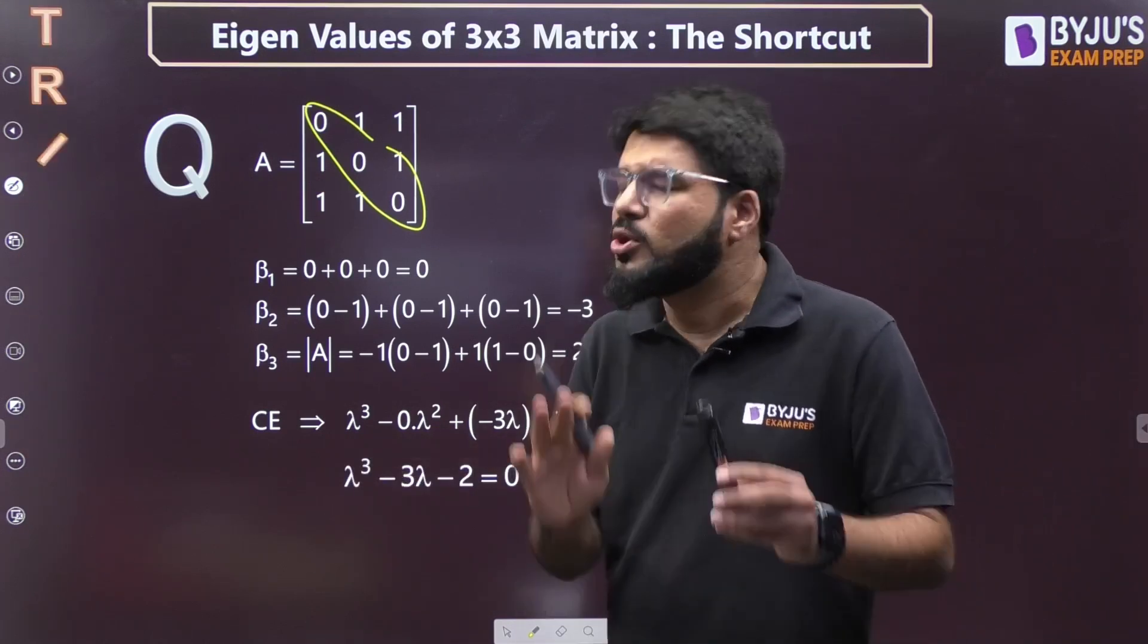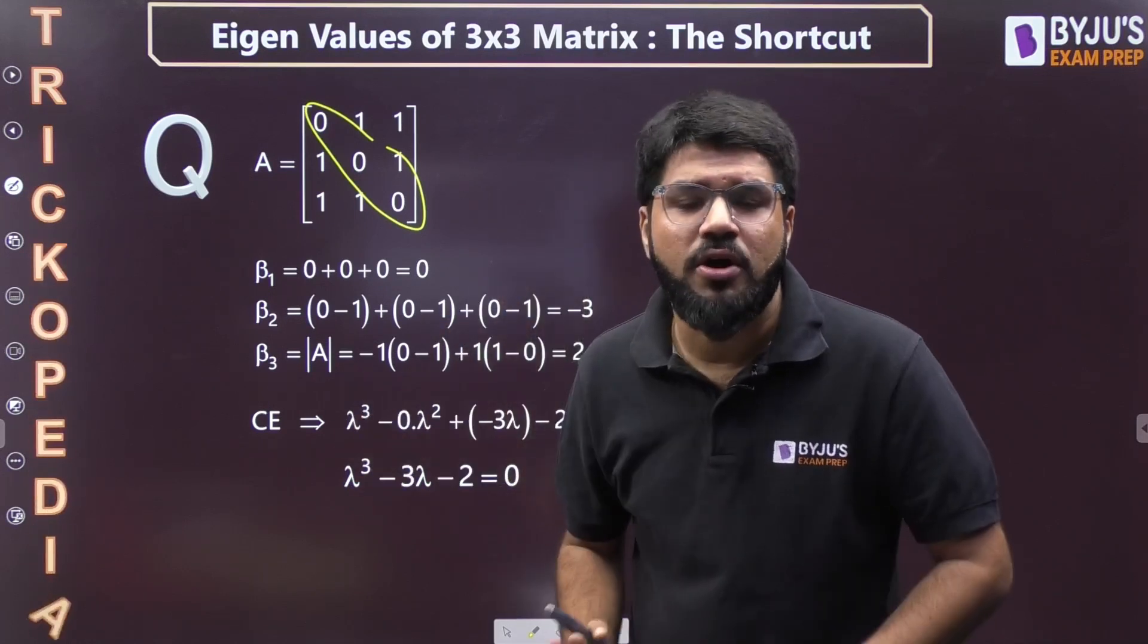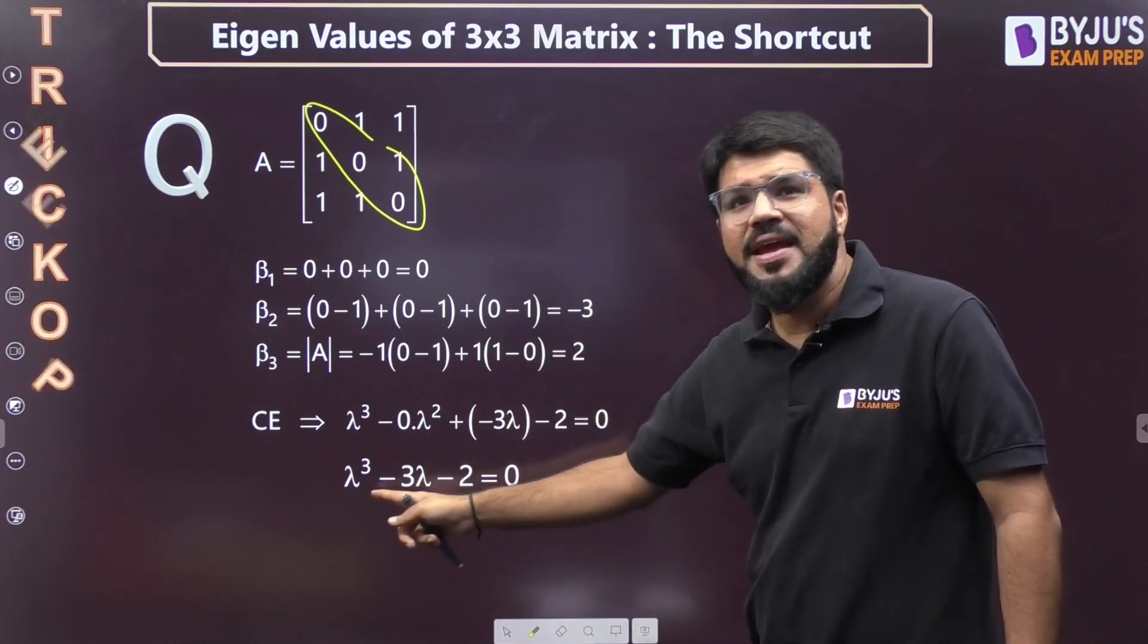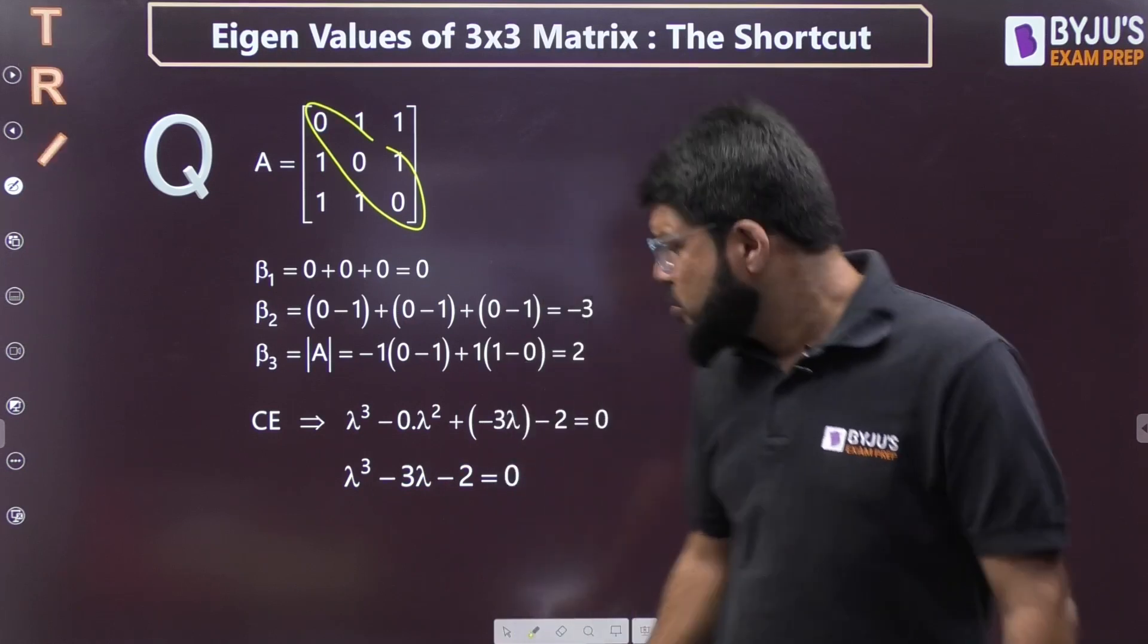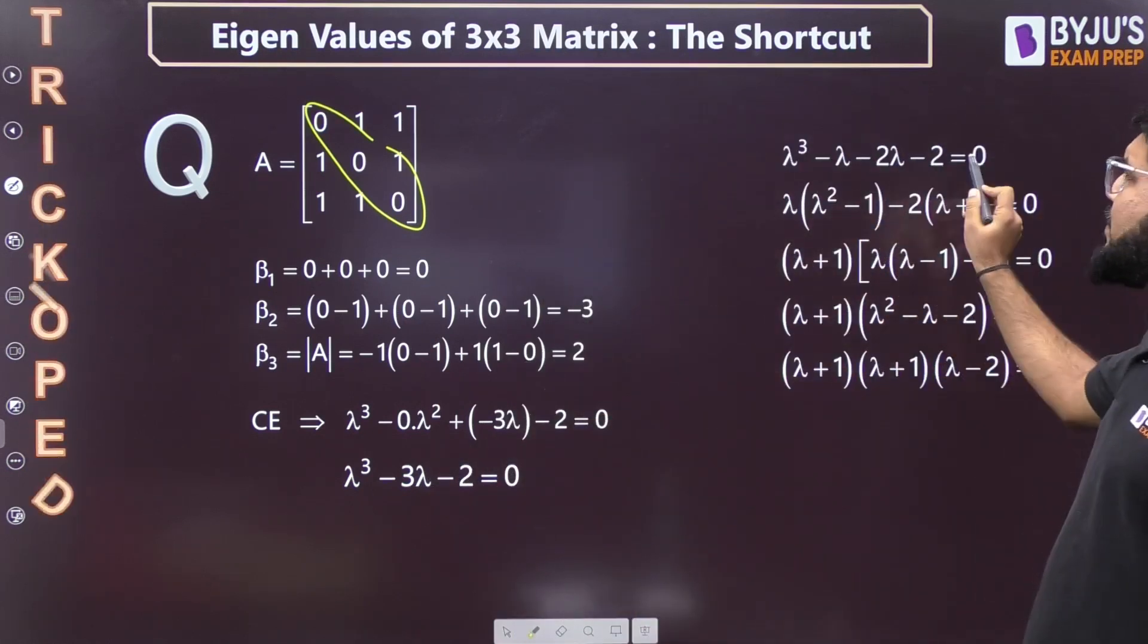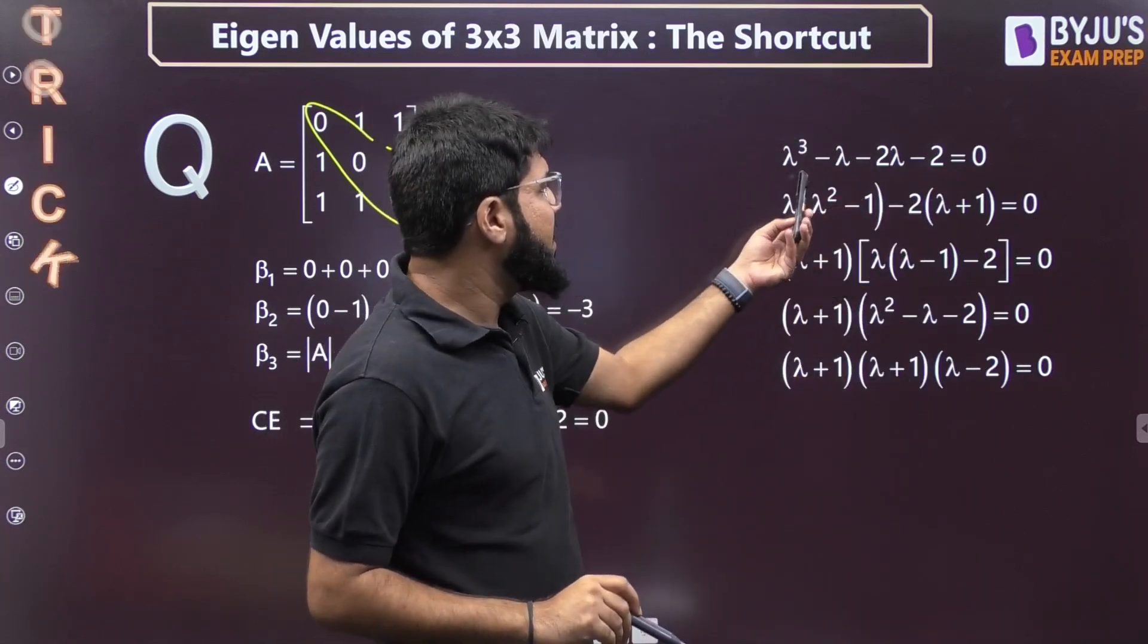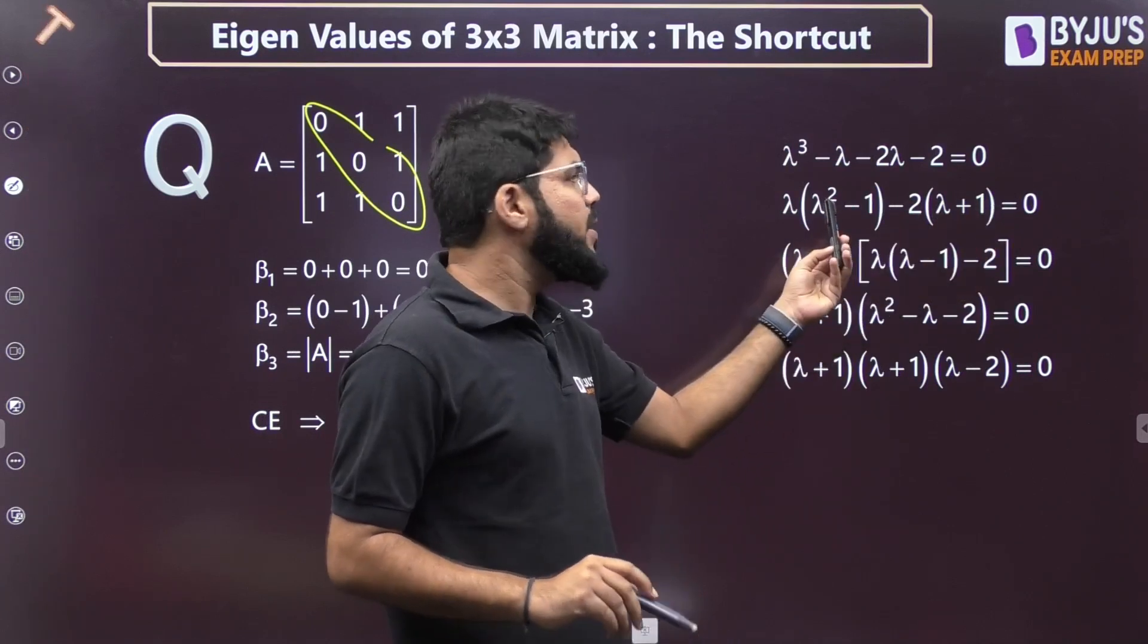You might be thinking there's no scientific calculator. Trust me, if IIT is making the paper, they know they haven't given you a calculator with cubic equations. If such a question comes, it can be factorized. You can break it into λ and 2λ. From here, take 2 common, take λ common: λ(λ² - 1) - 2(λ + 1).